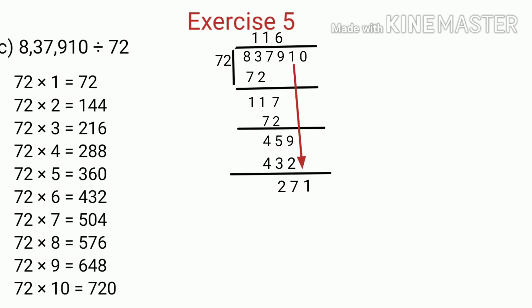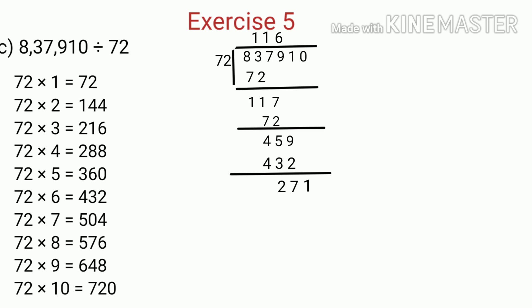Now we bring down the next digit, that is 1. And then we compare 271 and 72. Since 271 is greater than 72, we have to find a product of 72 which is equal to, or less than, and nearest to 271. We get the nearest product as 216. So we write 3 in the quotient, because 72 multiplied by 3 is equal to 216. And then we subtract 216 from 271, which is equal to 55.